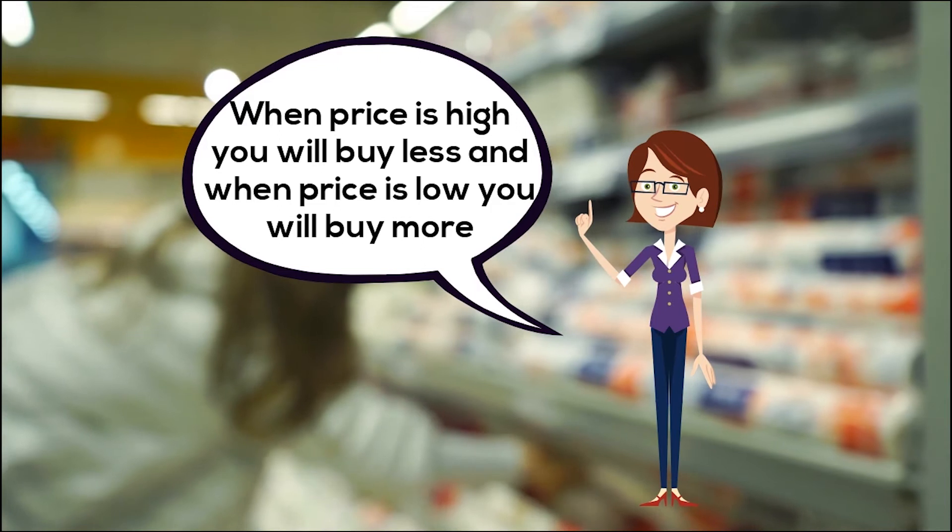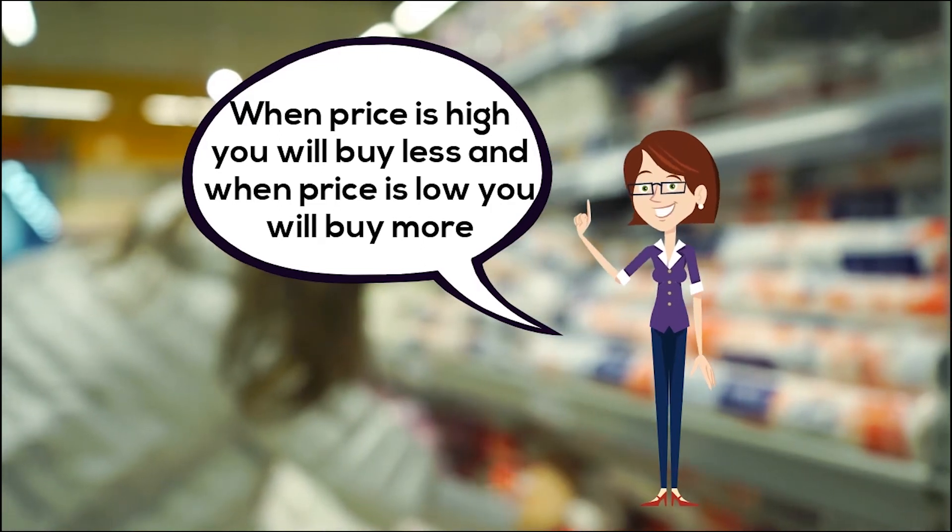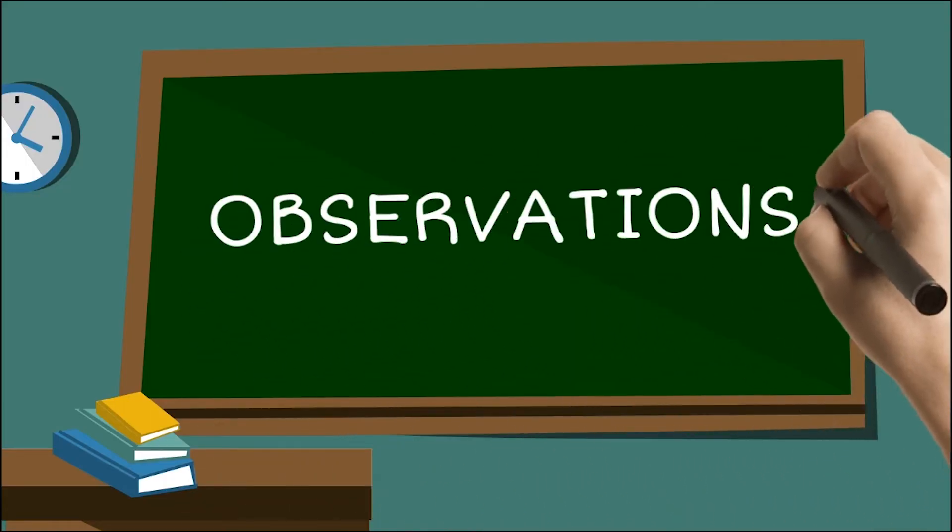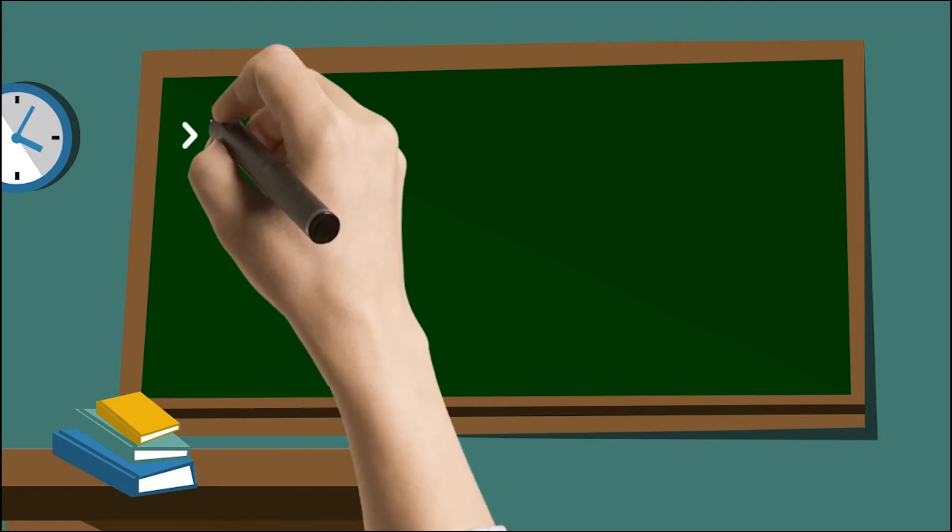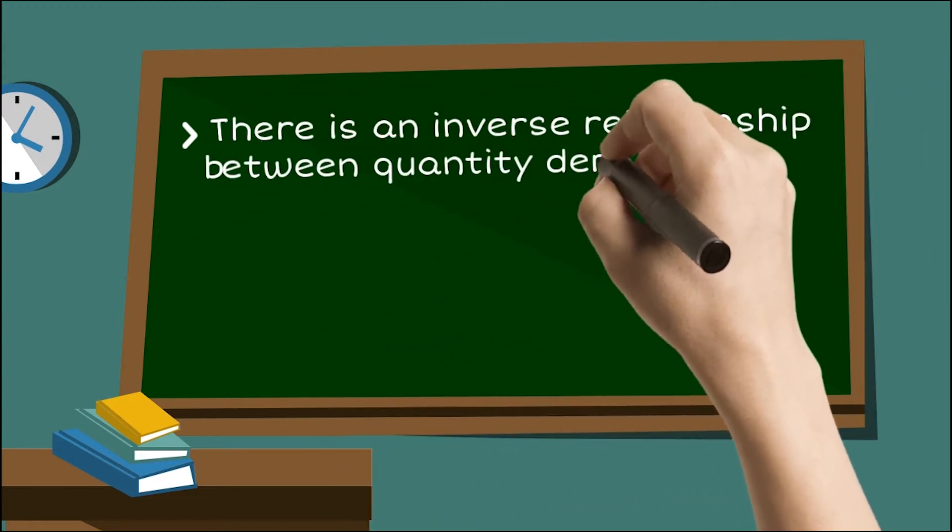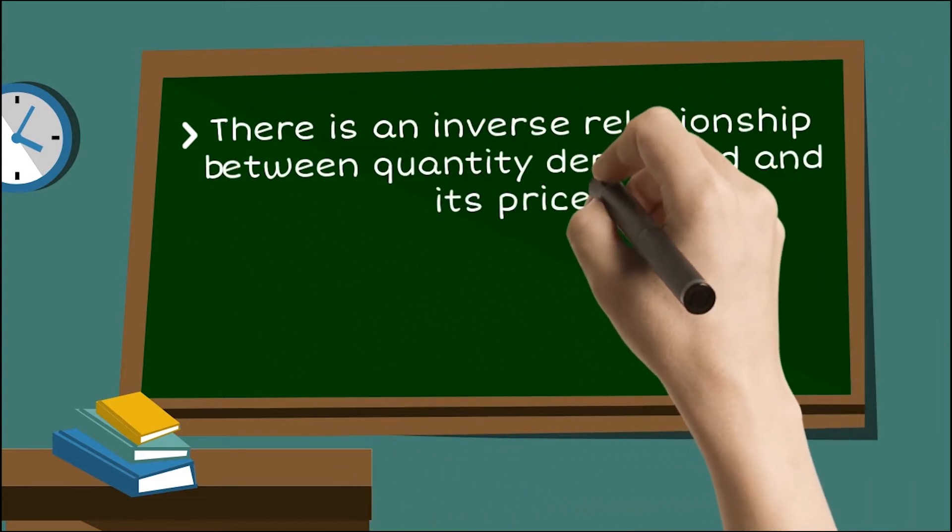The observations that can be made from this statement are: first, there is an inverse relationship between quantity demanded and its price; second, other things remain the same, or in other words, price is the only variable affecting the quantity demanded.